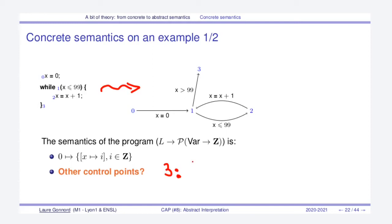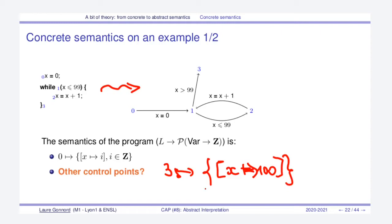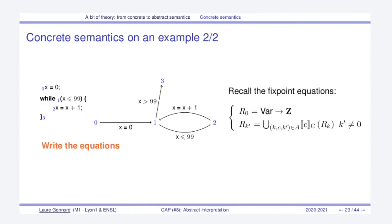I'll let you work out the other control points: what is the concrete semantics at point one and at point two? Make a pause on your video. Now that we have the final result, we will write the equations that should be solved in order to get this result. I will focus here on R1.